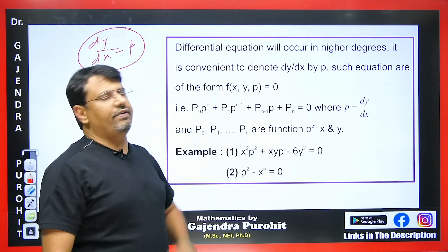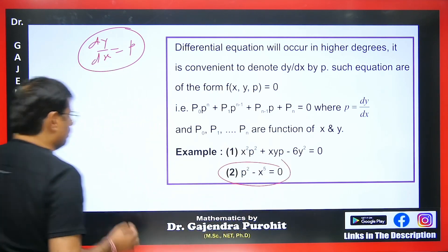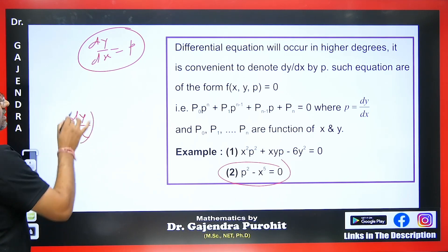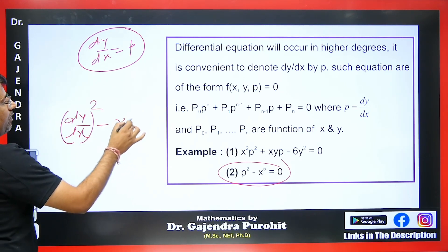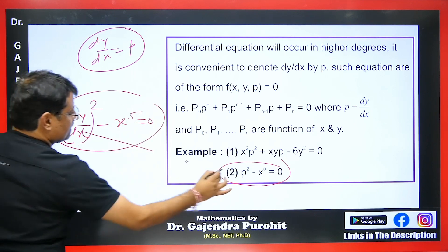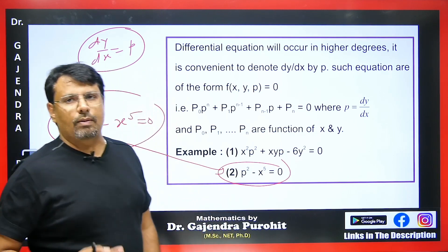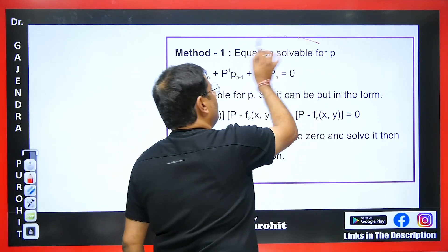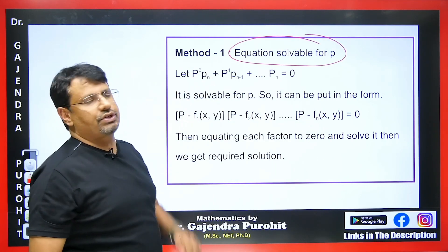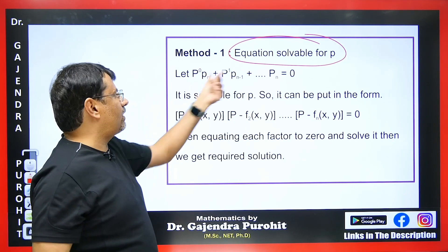This is an example of a higher degree and first order differential equation. The actual equation is (dy/dx)² − x⁵ = 0. Instead of dy/dx, it is written as P. The first method is solvable for P. If we have any equation given, the first step to solve it is to factorize it.